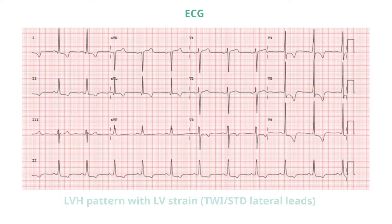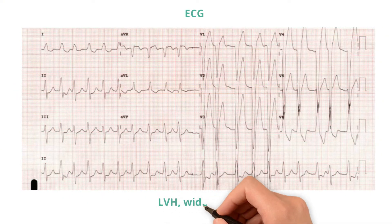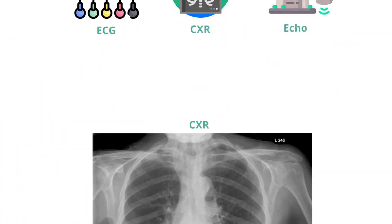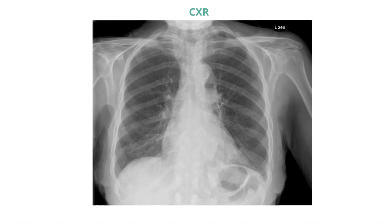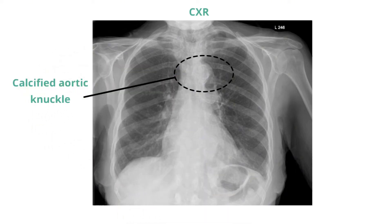Another ECG may show LV hypertrophy and left bundle branch block, as well as atrial fibrillation with a fast ventricular response in a patient with severe aortic stenosis. On chest x-ray, although many patients will have a normal film, some patients have visible calcification of the aortic knuckle, which is associated with calcification and stenosis of the aortic valve.